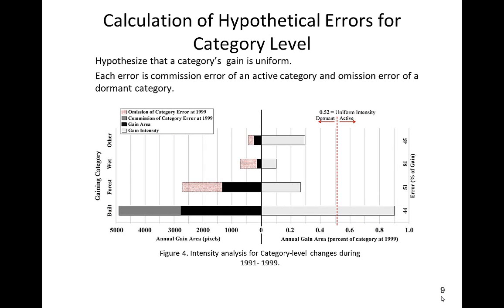At the category level, we focus on the deviation from the uniform line for the gain and loss of each category. This figure shows the category level gains for the interval between 1991 and 1999. We focus on the regions where the pair of maps show apparent change. We hypothesize that each category changes with the same uniform intensity. Next, we hypothesize that classification errors within the change region can explain the deviations from the uniform line. The hypothetical errors account for the difference between the uniform intensity and the observed intensity.